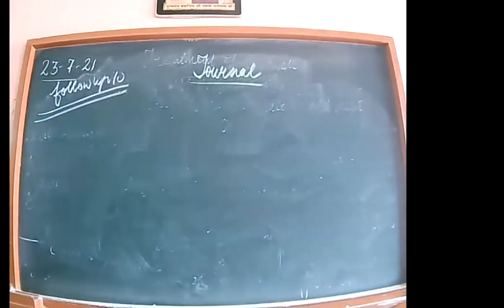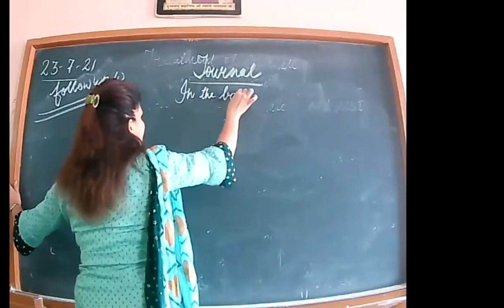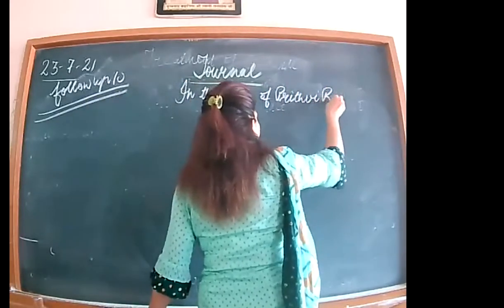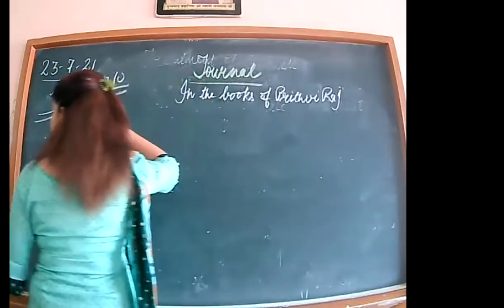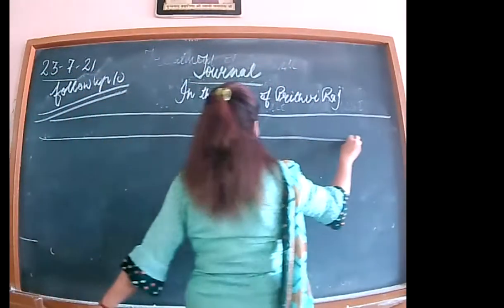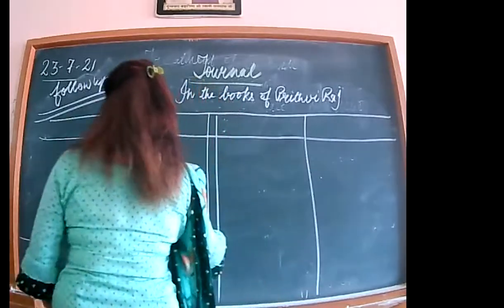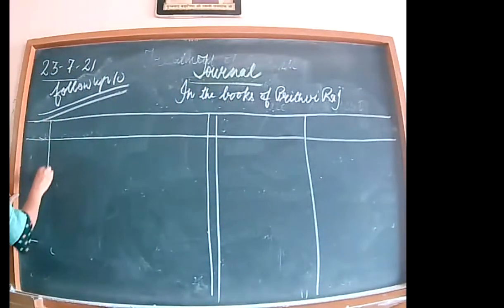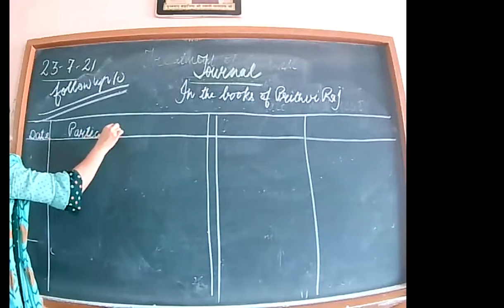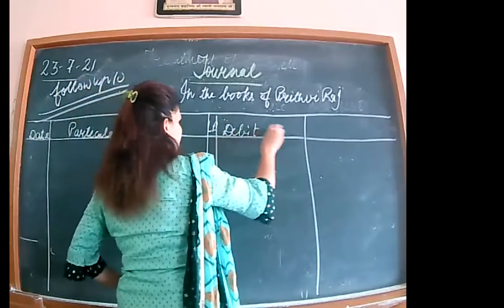Read the first line: prepare the journal in the books of Prithviraj. The proprietor's name is always given if it is mentioned in the question — Prithviraj. Prepare its format: date column, particulars, ledger folio, debit, credit.